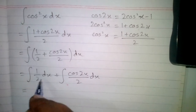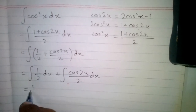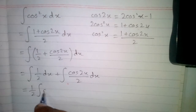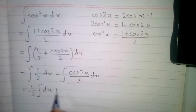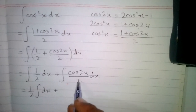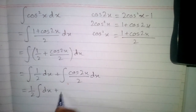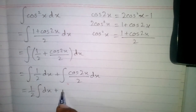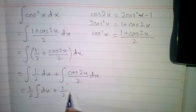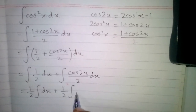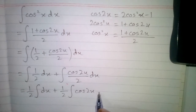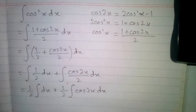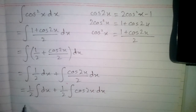We can write the one half in front of the integral of cos 2x. Then we take the 2 in the denominator outside of the integral as well, giving us one half integral of cos 2x upon 2 dx.